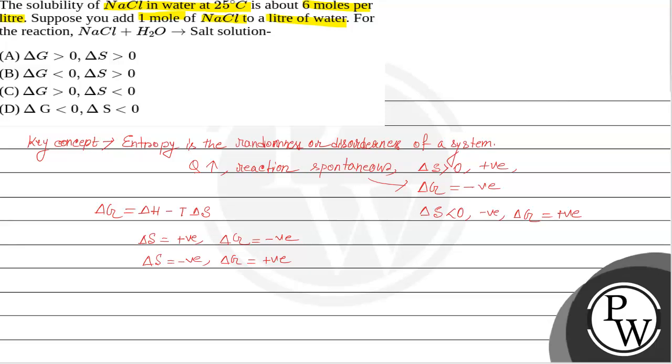The question is, NaCl solubility at 25 degrees centigrade is 6 moles per liter. This is the standard solubility at 25 degrees centigrade. Now, we added 1 mole of NaCl. We added 1 mole of NaCl to 1 liter of water.